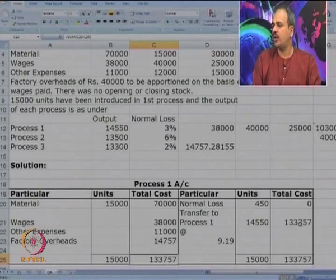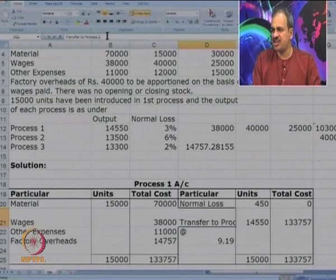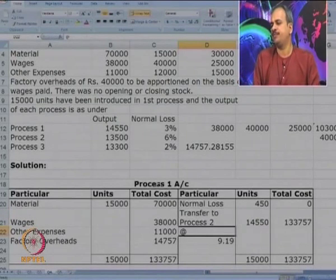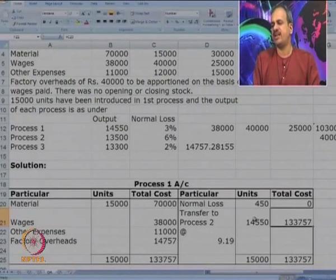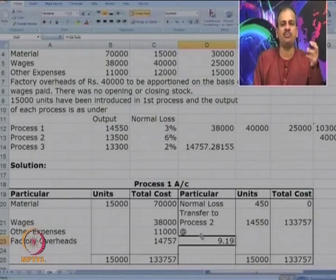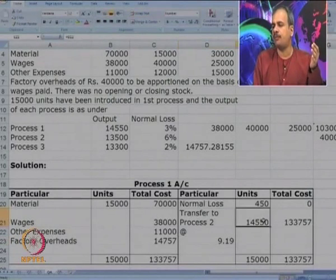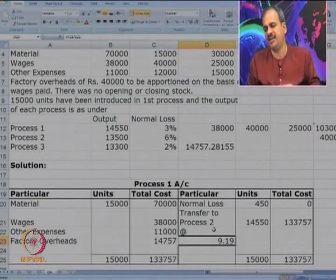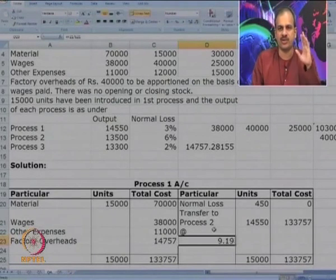The entire cost of manufacture — 133,757 — is transferred to Process 2 for 14,550 units. The rate per unit is 133,757 divided by 14,550, which gives 9.19.